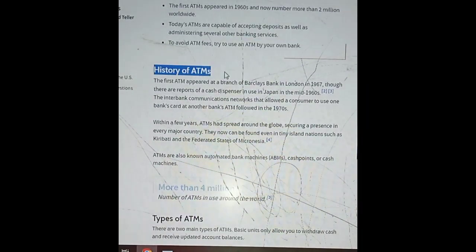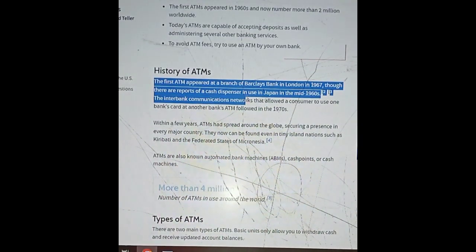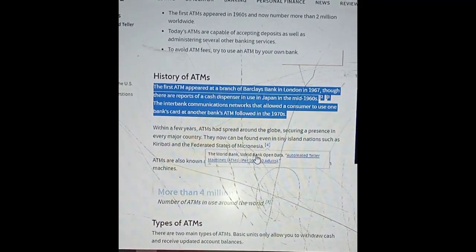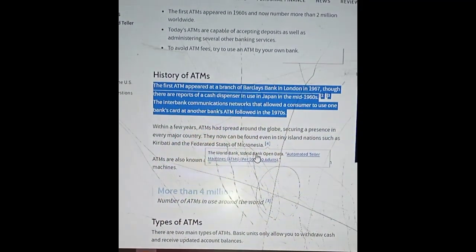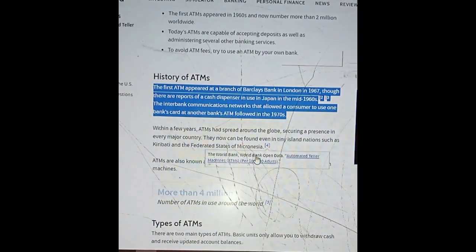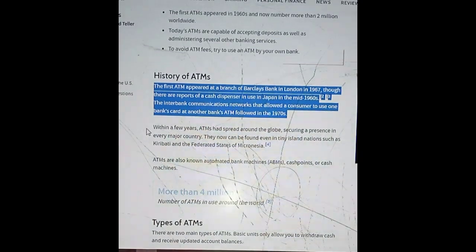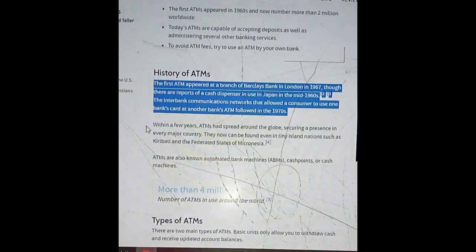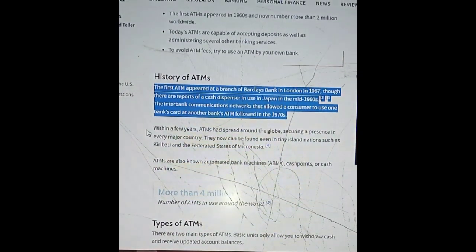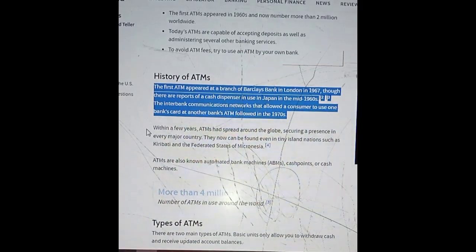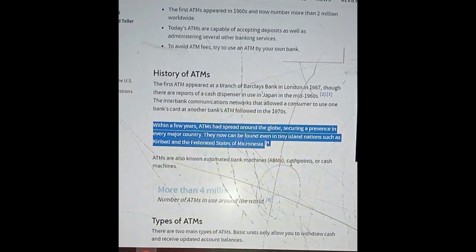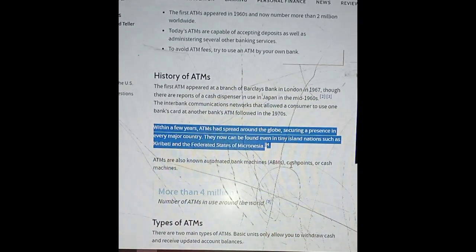History of ATMs: The first ATMs appeared at a branch of Barclays Bank in London in 1967, though there are reports of a cash dispenser in use in Japan in the mid-1960s. The interbank communications network that allows a consumer to use one bank's card at another bank's ATM system followed in the 1970s. Within a few years, ATMs had spread around the globe, securing a presence in every major country.